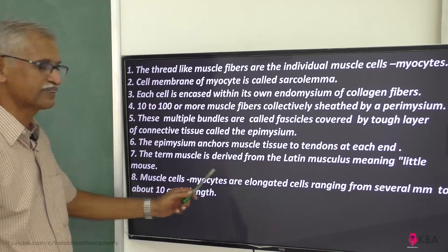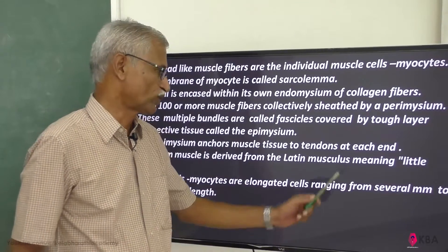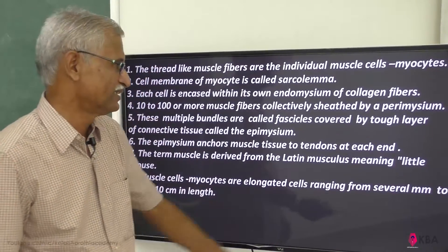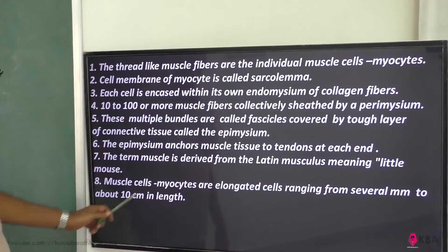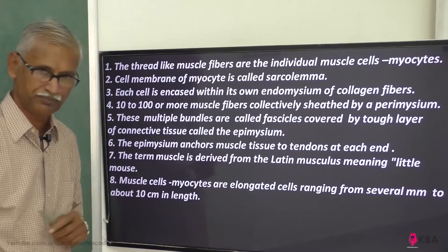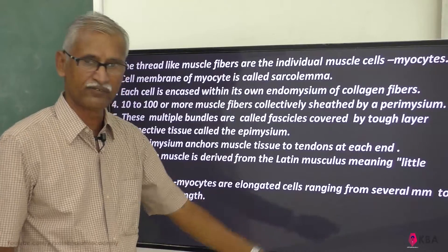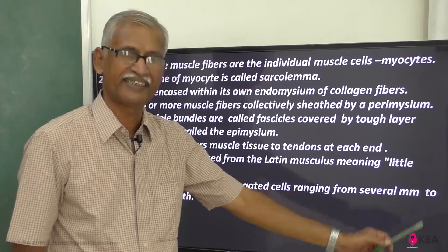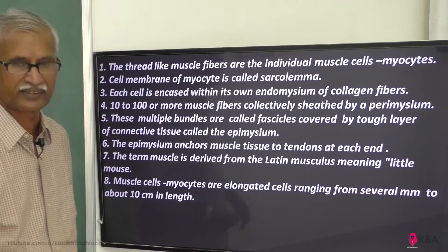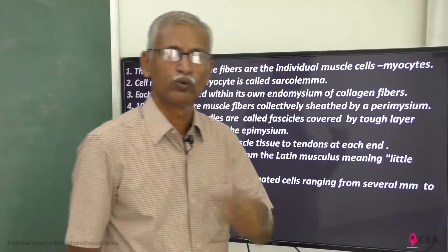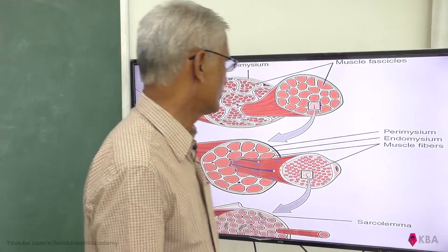The epimysium anchors the muscle tissue to the tendons. The term muscle is derived from the Latin word 'musculus,' which means 'little mouse.' Muscle cells are elongated cells ranging from several millimeters to 10 centimeters in length.